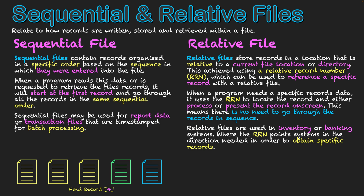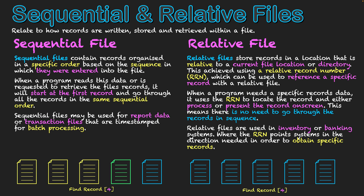To illustrate the relative file: here are my five records. If I want record four, I type in that I want record four, and because all records are indexed on the system, it finds it straight away — it can see record four and goes directly to it because each record has that RRN attached to it.